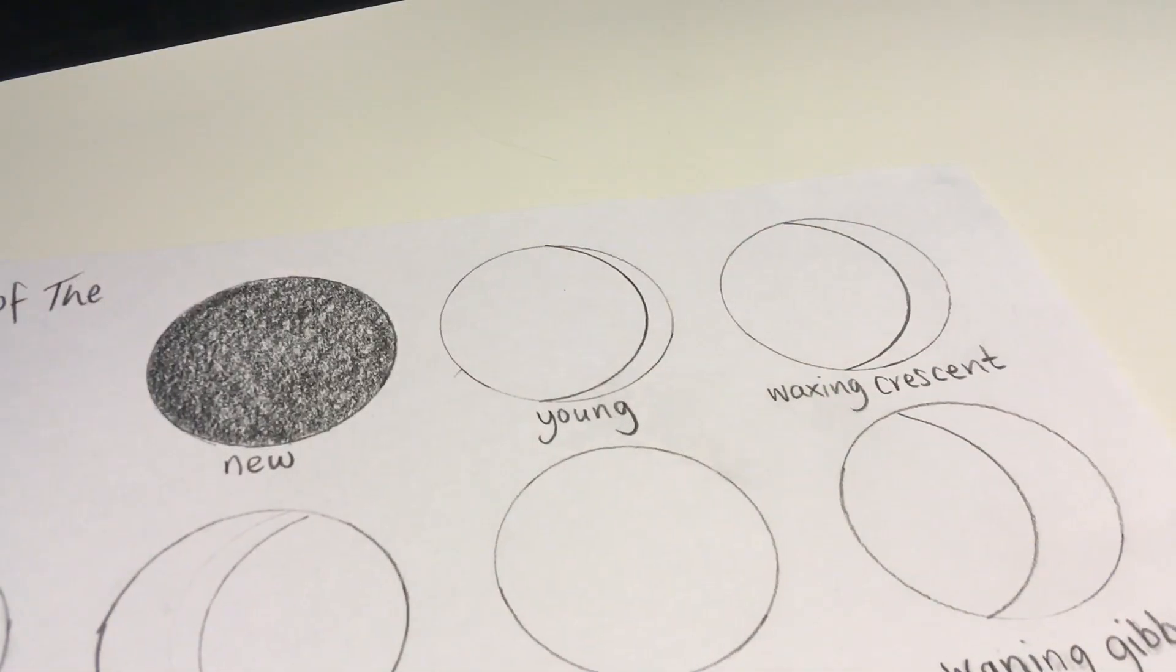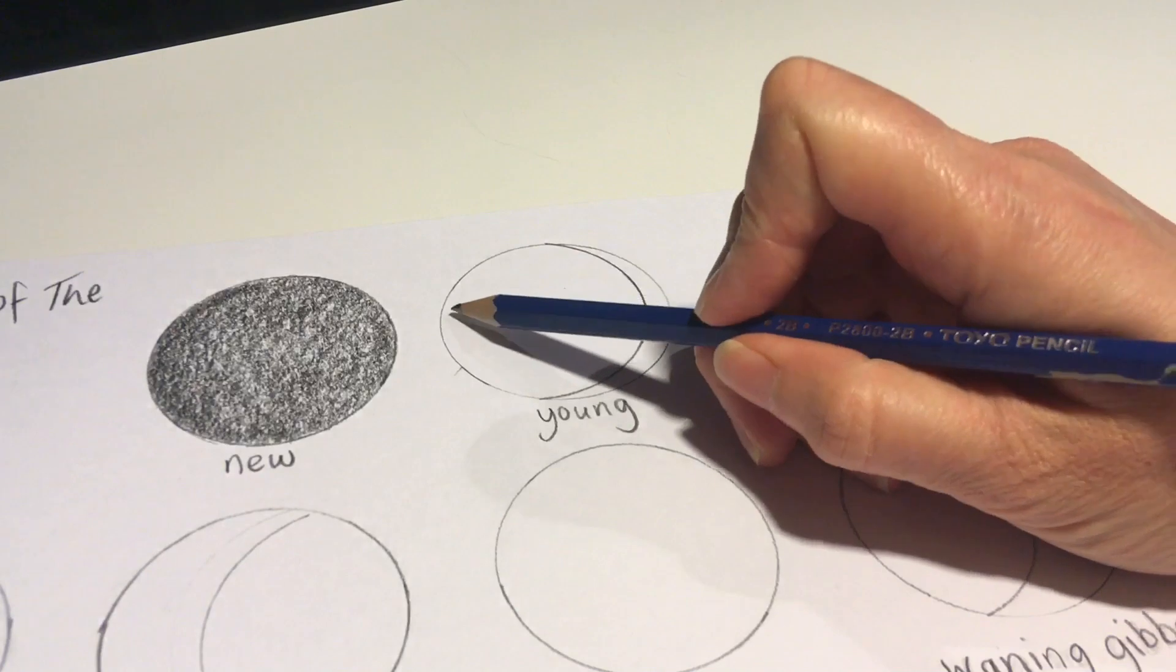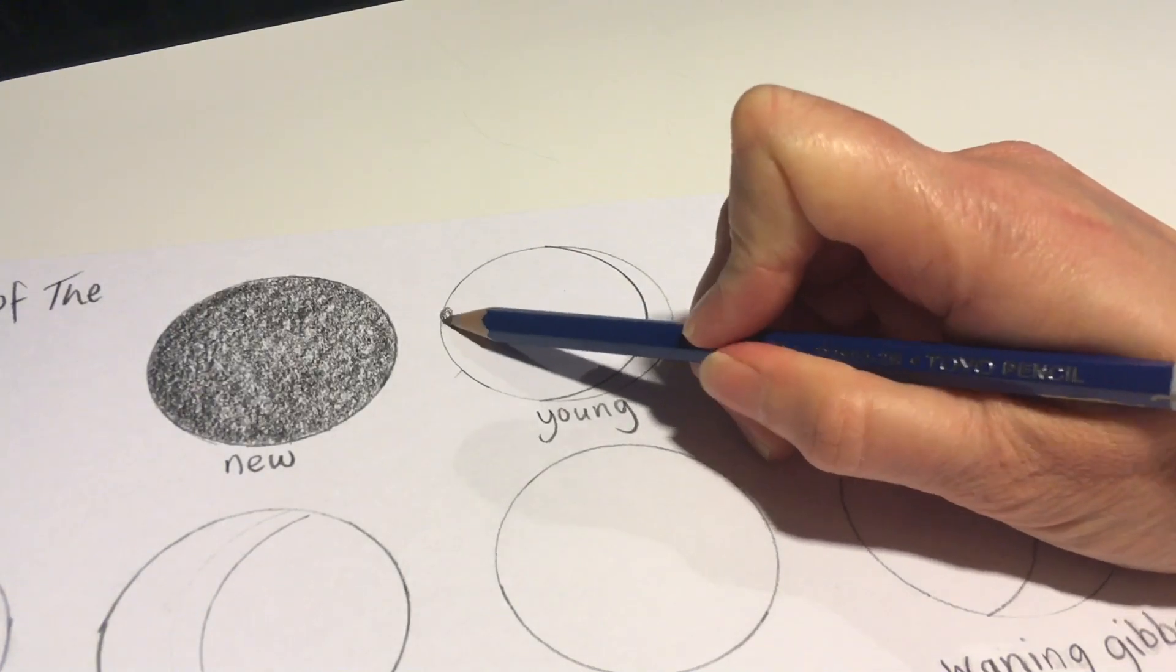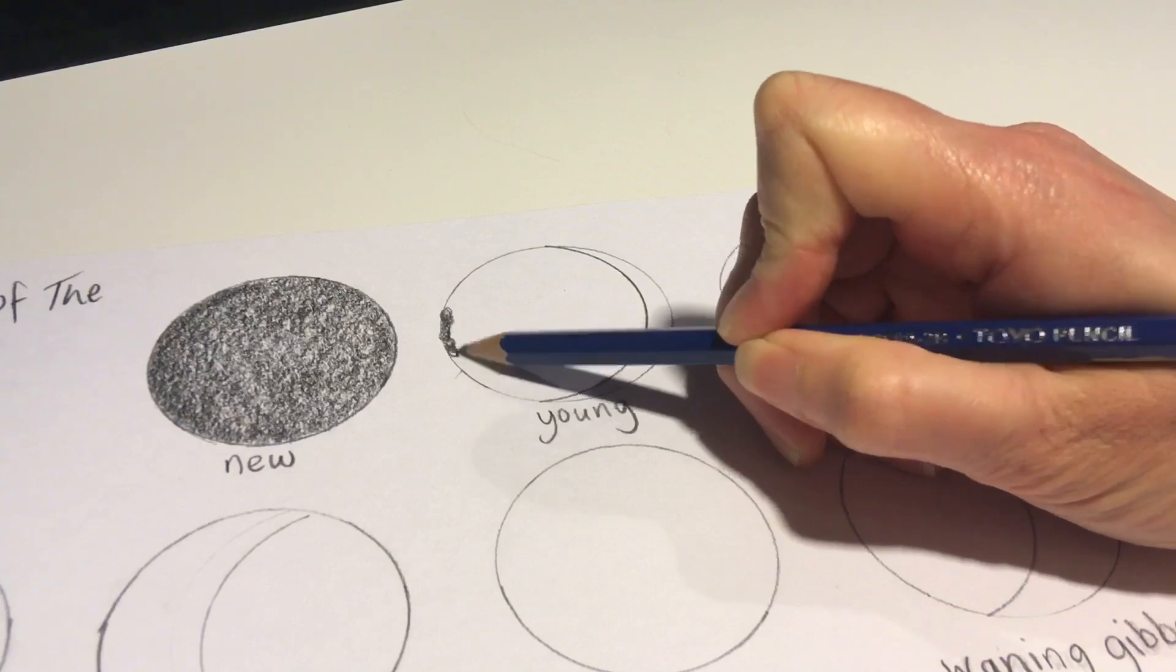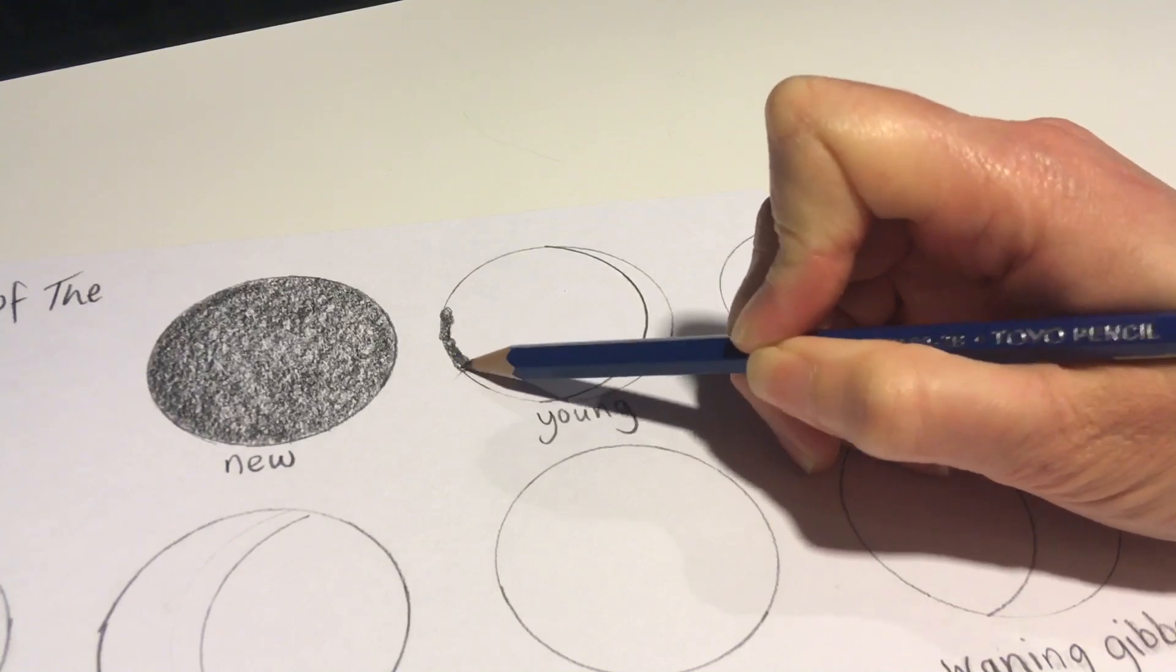Now we're ready to add some shading to the young moon, so again we're going to build up the shading using little circular motions with the pencil.